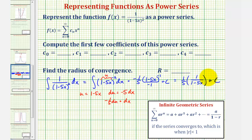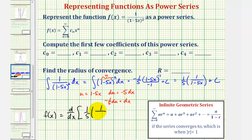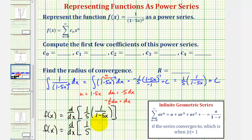Because this is the anti-derivative of f(x), the derivative of this anti-derivative would be f(x). This means f(x), the given function, is equal to the derivative with respect to x of 1/5 times 1/(1 - 5x). We can leave off the constant, so f(x) equals the derivative with respect to x of 1/5 times the power series for this function, which is the summation from n = 0 to infinity of a times r^n, where a = 1 and r = 5x.